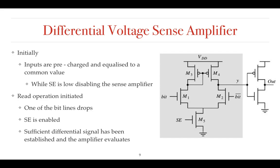Going to the working of the differential voltage sense amplifier: initially, during the read operation, both inputs — bit as well as bit bar lines — are pre-charged and equalized to a common value like VDD. During this time, the SE signal will be low in order to disable the sense amplifier. Once the read operation is initiated, one of the bit lines — either bit line or bit bar line — will pull down to zero. At that time, SE will go high and the entire sense amplifier will be enabled. SE will be enabled only when the read operation is initiated.